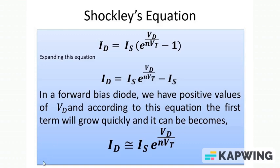That is why this second term can be neglected in case of a forward bias diode. In case of a reverse bias diode, the Vd here is negative, so this first term becomes negligible and only Is is dominating. Let's understand this topic using a graphical representation.